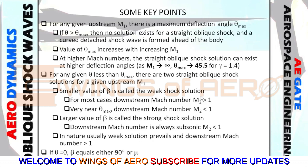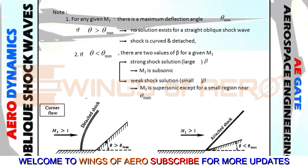When the deflection theta is zero — meaning the flow stays on the same horizontal plane — then beta equals either 90 degrees (normal shock) or mu (the Mach wave angle). This is the same concept explained earlier. When theta is greater than theta max, a detached shock wave forms; when theta is less than theta max, the shock remains attached. In all cases, the upstream Mach number is greater than 1.